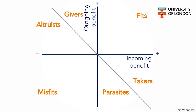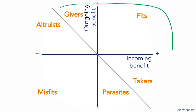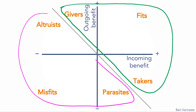Incoming benefit is how much this business gains or loses from belonging to this portfolio. Outgoing benefit is how much the other businesses gain or lose from the presence of this business. Thus, if you are a business, incoming benefit is how much you benefit, and outgoing benefit is how much others benefit. Synergies for a business is the sum of the incoming and outgoing benefit. If the business is above the diagonal, then synergies are positive. If the business is below the diagonal, then synergies are negative.